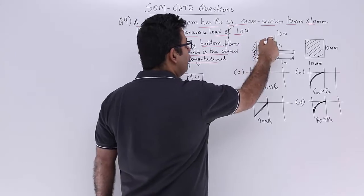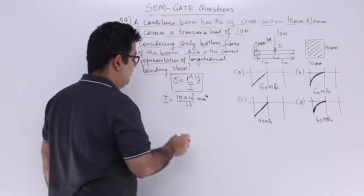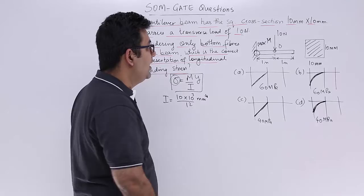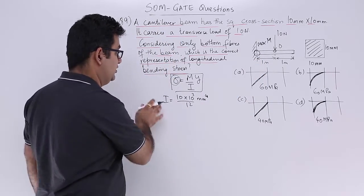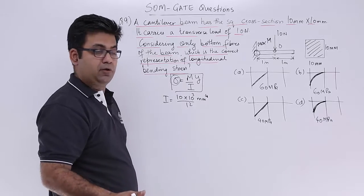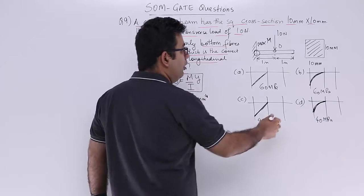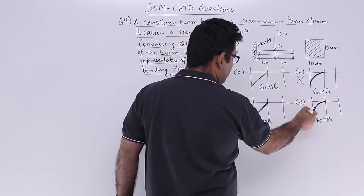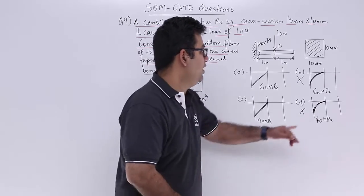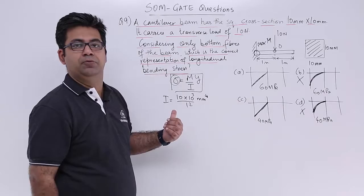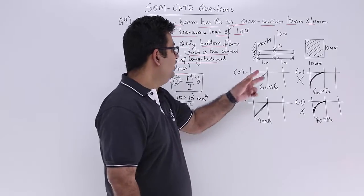Maximum bending moment means maximum stress. And the variation is always linear. You can see this. It is a linear variation. So the options B and option D are out of the game. You cannot have parabolic variation in such a scenario. You will always have a linear variation.